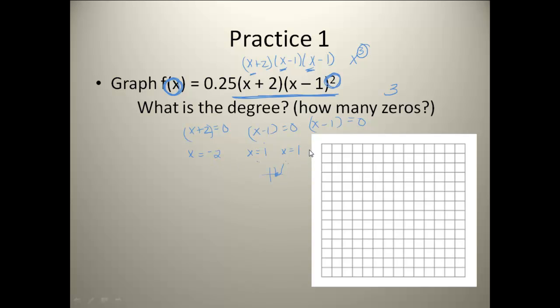So when I go over here to set up my graph, I've got my three zeros already found. I've got my zeros plotted. Now I need to go ahead and do my table of values to find the rest of my graph.